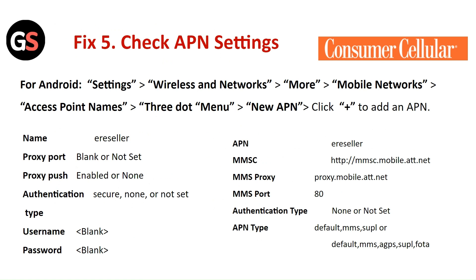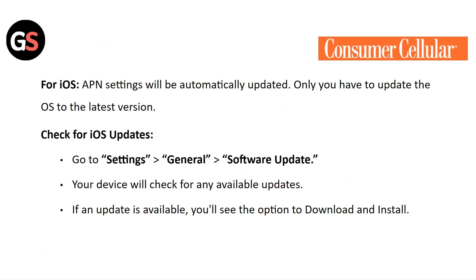Fix 5: Check the APN settings. For Android, go to Settings, then Wireless and Networks, click on More and Mobile Networks, then click on Access Point Name and tap the three-dot menu. Tap Add to add a new APN. For iOS, the APN settings will be automatically updated — you only need to update the OS to the latest version. Go to Settings, General, and Software Update. Your device will check for any available update, and if one is available, you will see the option to download and install.